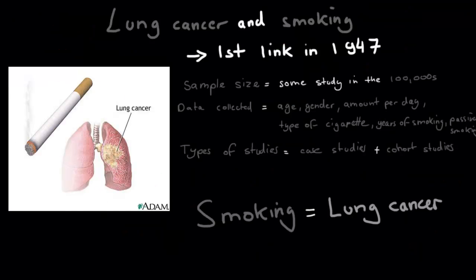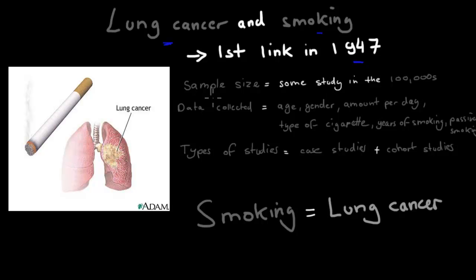A good example is lung cancer. We know now that lung cancer is linked to smoking, but we didn't know that beforehand, so people didn't really care about smoking because they didn't think it was unhealthy. The link was first established in 1947, and since then we've had many different studies. Some of those studies have had hundreds of thousands of participants, so that's a huge sample size.